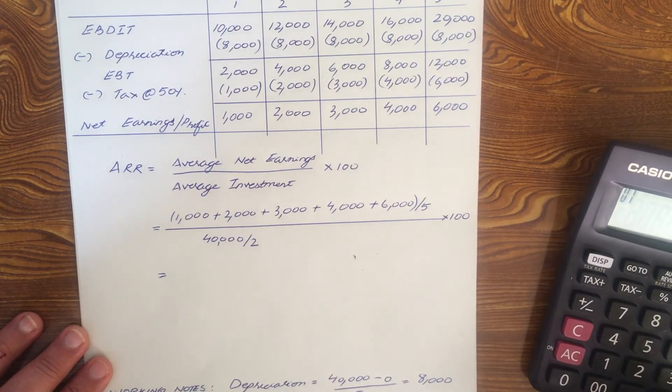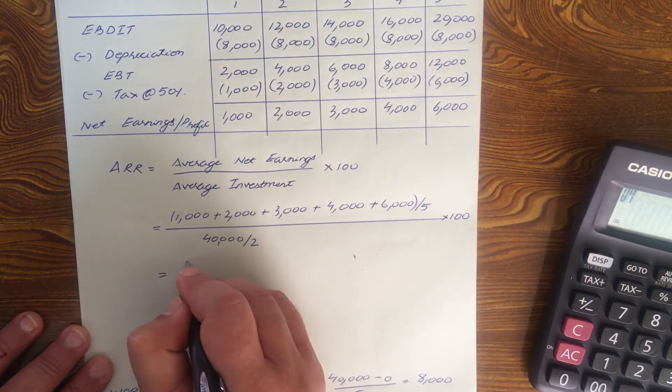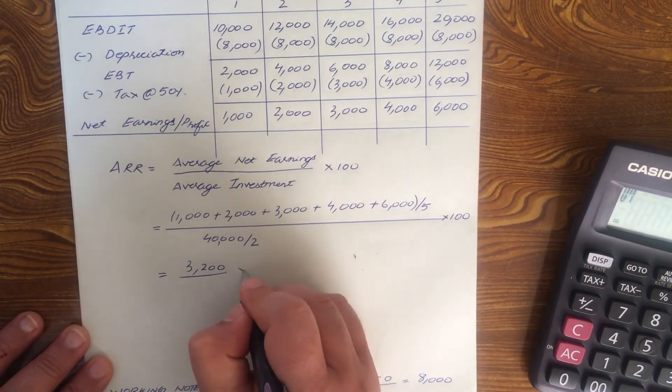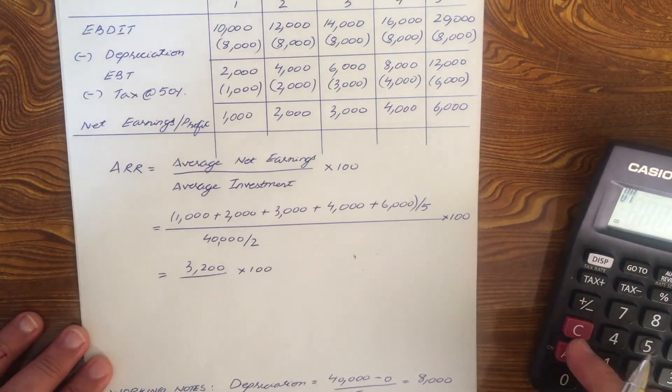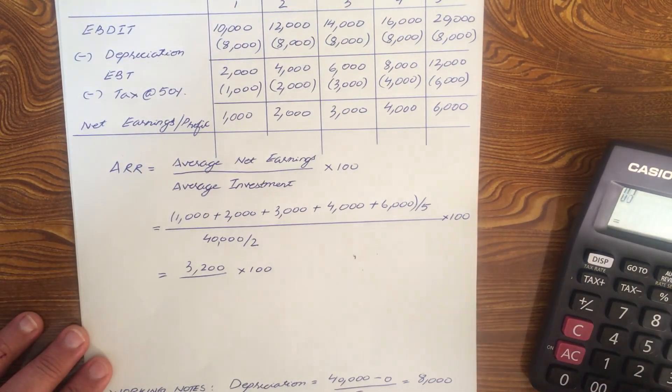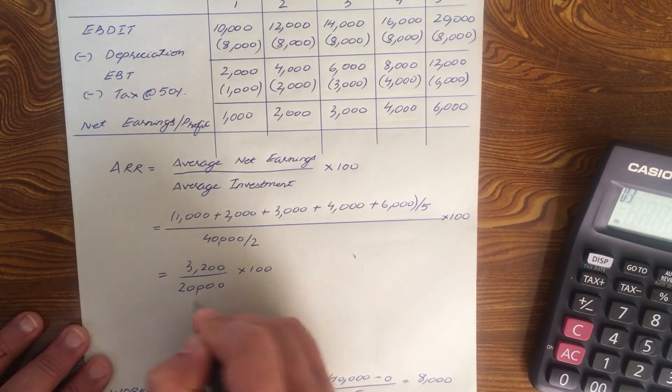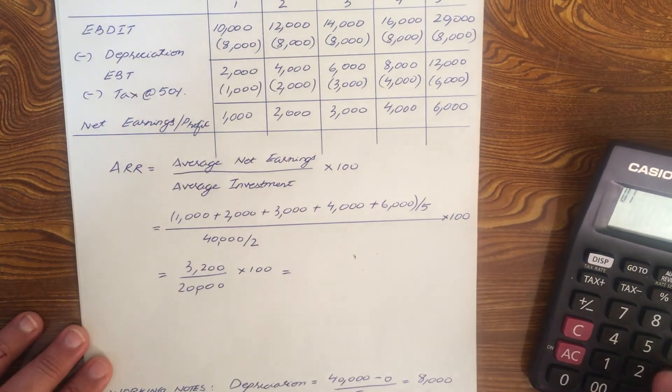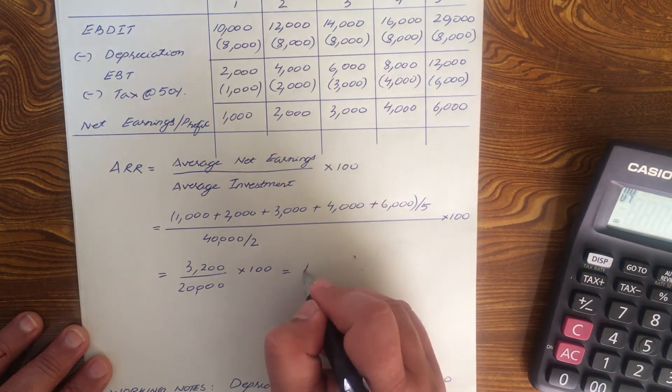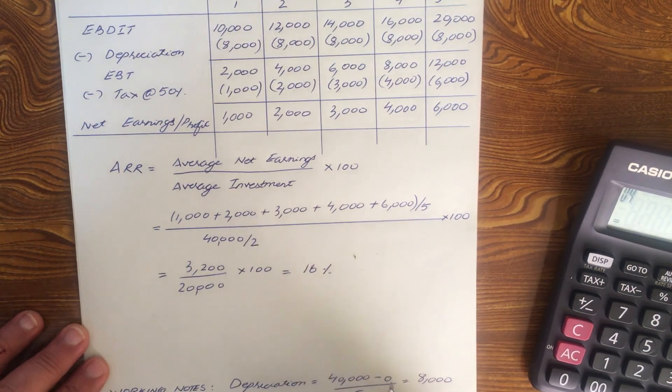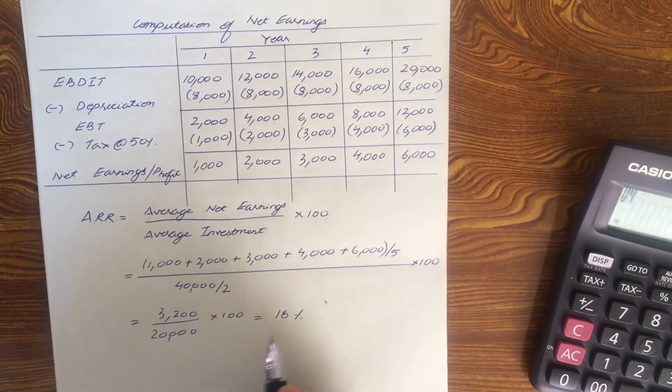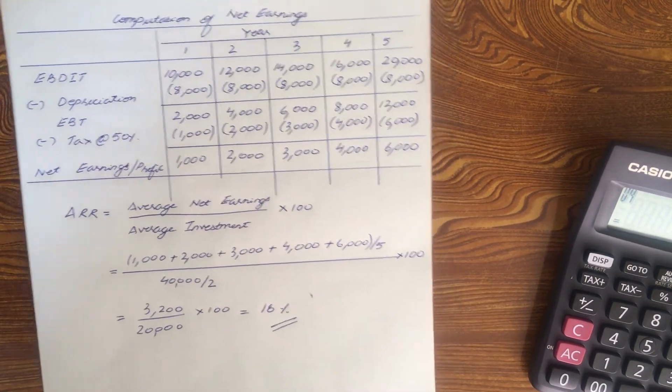So 1,000 plus 2,000 plus 3,000 plus 4,000 plus 6,000 divided by 5 is 3,200 into 100. 40,000 divided by 2 is 20,000. So 3,200 into 100 divided by 20,000 is equal to 16 percent. So there you have it. The answer ARR is 16 percent.